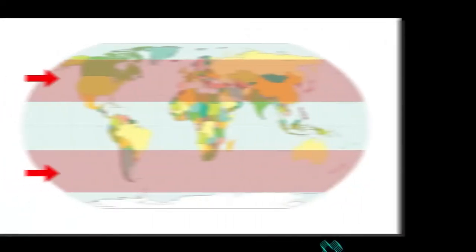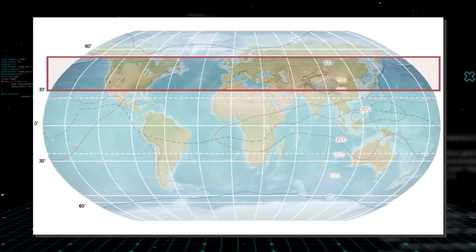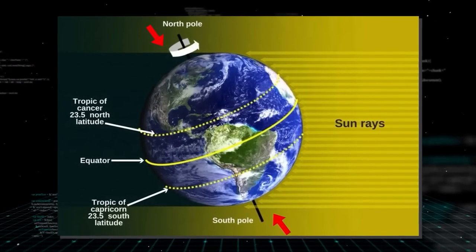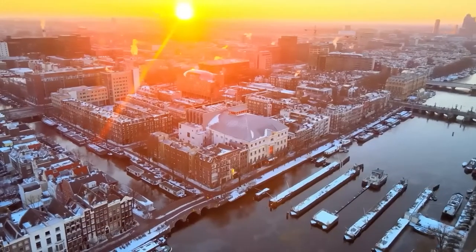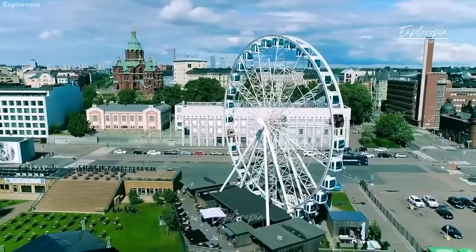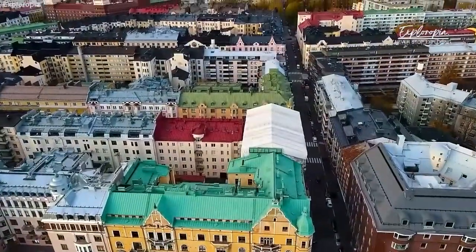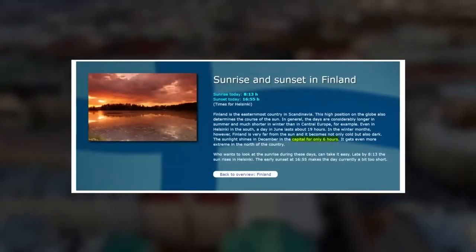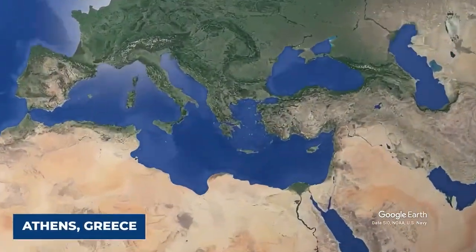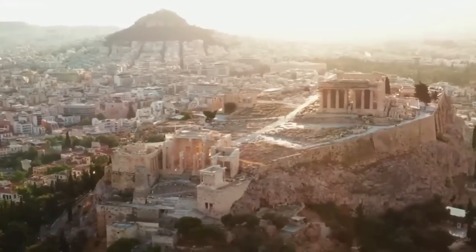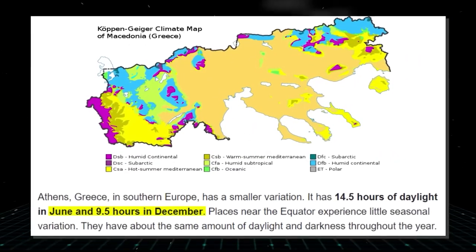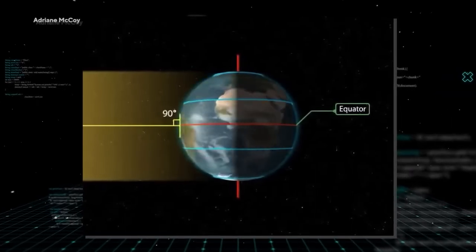Not every part of the planet gets four seasons per year. Only the mid-latitudes — areas that are neither near the poles nor close to the equator — have a four-season year. The seasons differ more dramatically as you travel north or south. In the middle of June, Helsinki, Finland has 18.5 hours of daylight, but the city gets less than six hours of sunlight in mid-December. In contrast, southern Europe's Athens, Greece has a smaller variation: 14.5 hours of daylight in June and 9.5 hours in December.